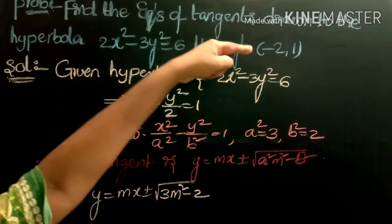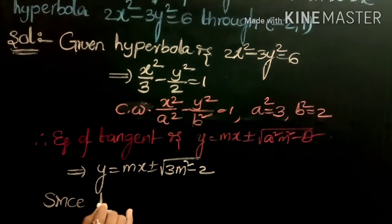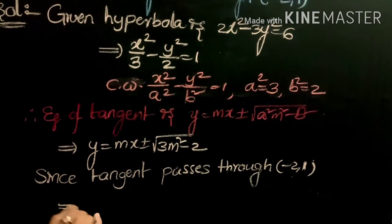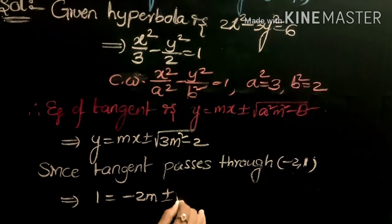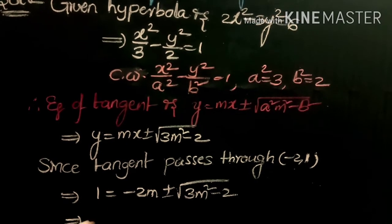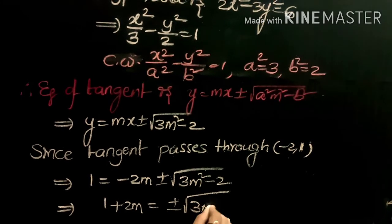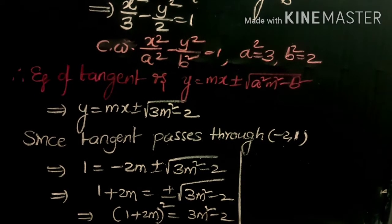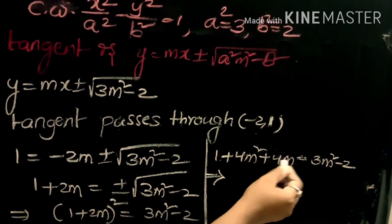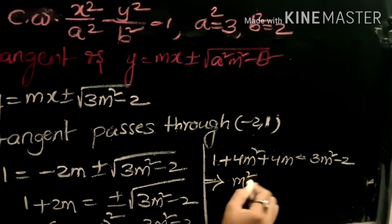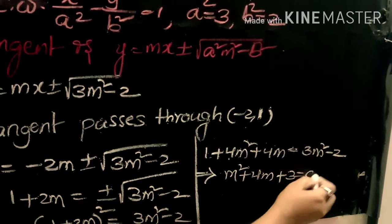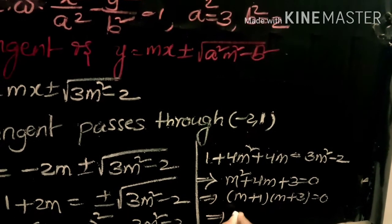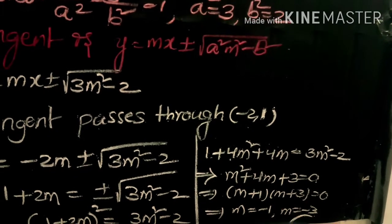Since the tangent passes through (-2, 1), substituting: 1 equals -2m plus or minus square root of (3m squared minus 2). So 1 plus 2m equals plus or minus square root of (3m squared minus 2). Squaring both sides: (1 + 2m) squared equals 3m squared minus 2, giving 1 plus 4m squared plus 4m equals 3m squared minus 2. This simplifies to m squared plus 4m plus 3 equals 0, so (m + 1)(m + 3) equals 0, giving m equals -1 and m equals -3.